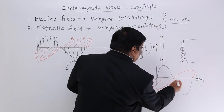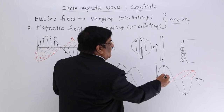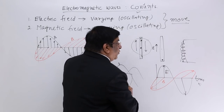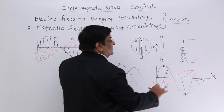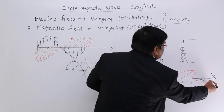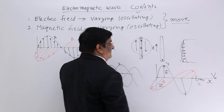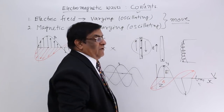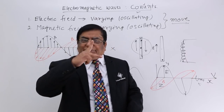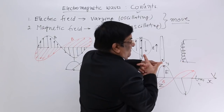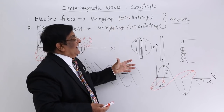Both the electric field E and magnetic field B are propagating and moving in one direction — the direction of velocity. The velocity is in the x-direction, the electric field is in the y-direction, and the magnetic field is in the z-direction. All three directions are engaged. The electric field and magnetic field are at right angles to each other, and the direction of propagation is the third direction, perpendicular to both of them.